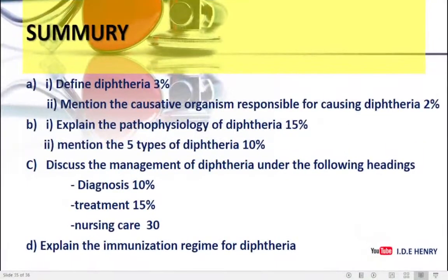A quick summary: the question was to define diphtheria. Diphtheria can be defined as an acute respiratory inflammatory condition of the larynx, pharynx, trachea, and nose, caused by Corynebacteriae and Corynebacterium diphtheriae, and is characterized by barking cough, pseudogreyish membrane, fever, and airway inflammation. We mentioned the causative organism, explained the pathophysiology, mentioned the five types of diphtheria, discussed the management under three critical headings, and explained the immunization regime. Thank you very much for watching my video. Don't forget to like and share, and I'll be expecting comments if you need any clarification. See you in my next video.